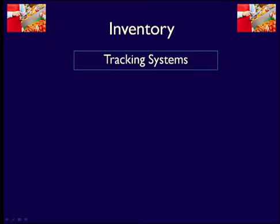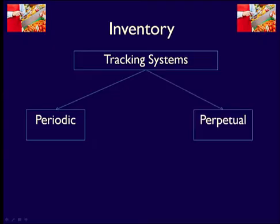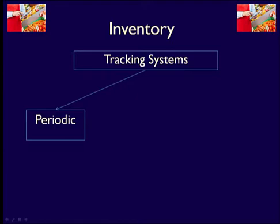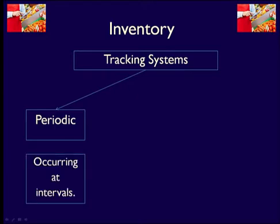There are two inventory systems that can be used to record and track inventory: the periodic inventory system and the perpetual inventory system. Let's start with the periodic system. Periodic means happening occasionally at set intervals. To demonstrate the periodic system, let's use an example.